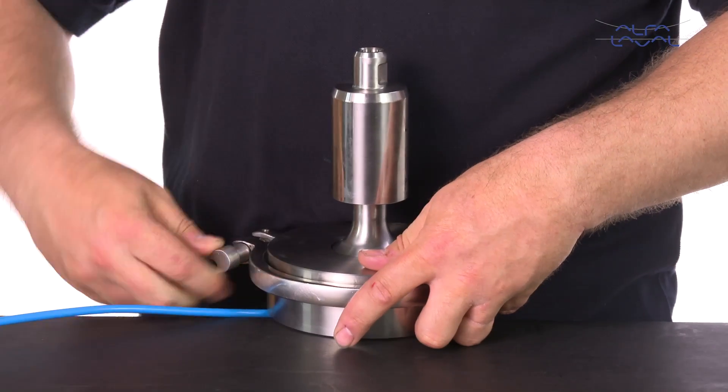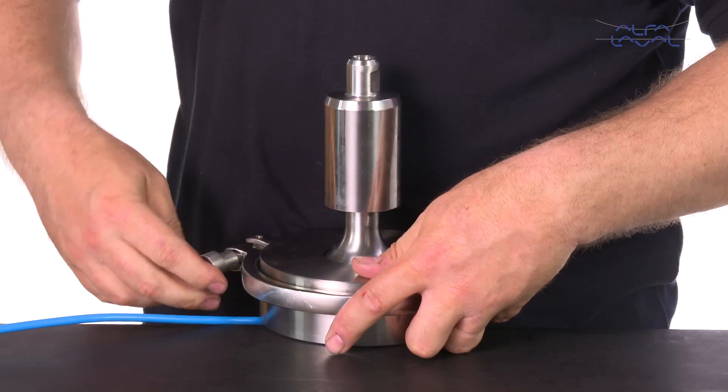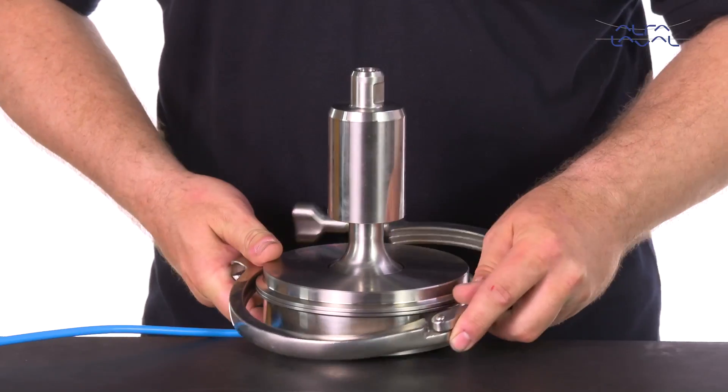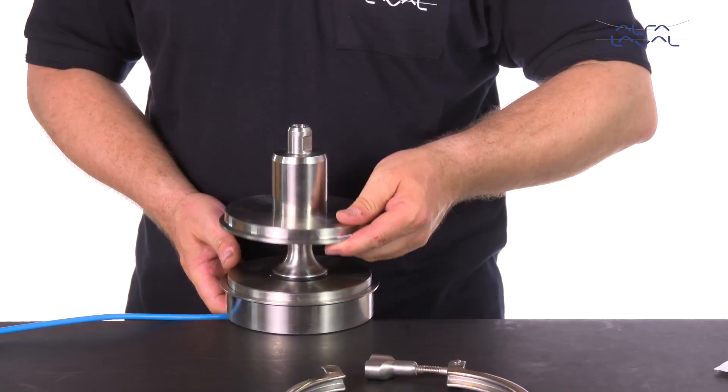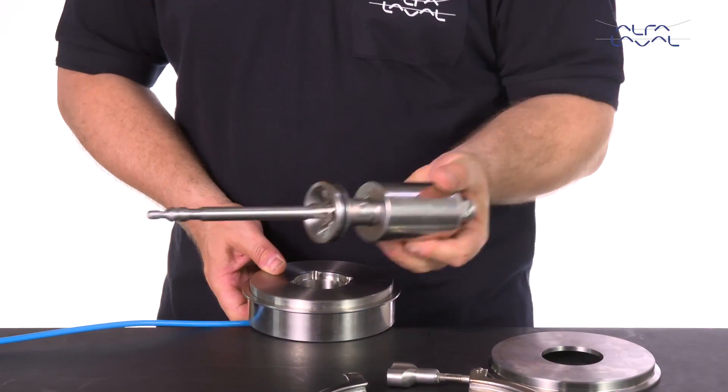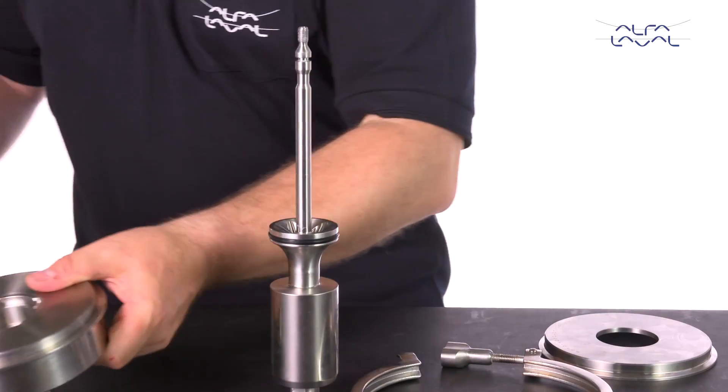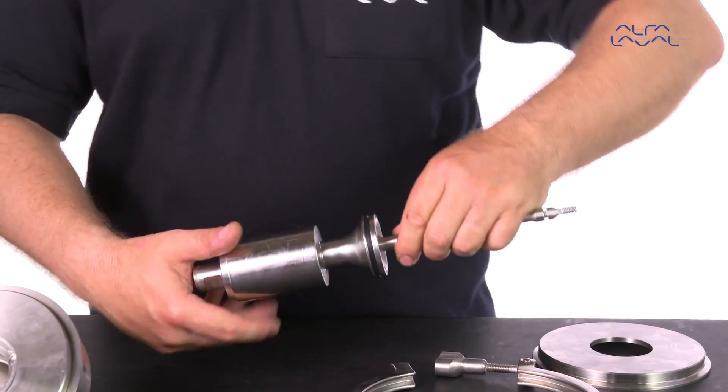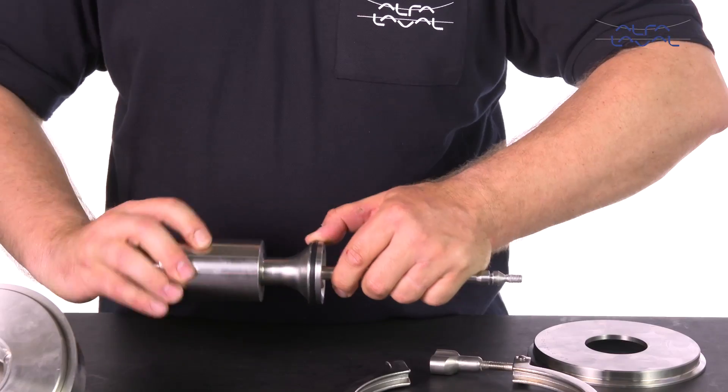Remove the plug from the tool. Carefully inspect that the radial seal is sitting correctly in the groove.